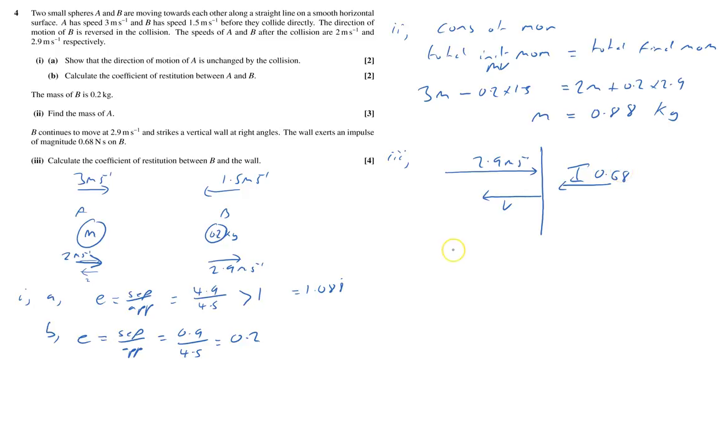And what I do know is that the impulse equals change in momentum. I have to be careful of direction. Impulse 0.68 equals, the initial thing, the mass we knew was 0.2.